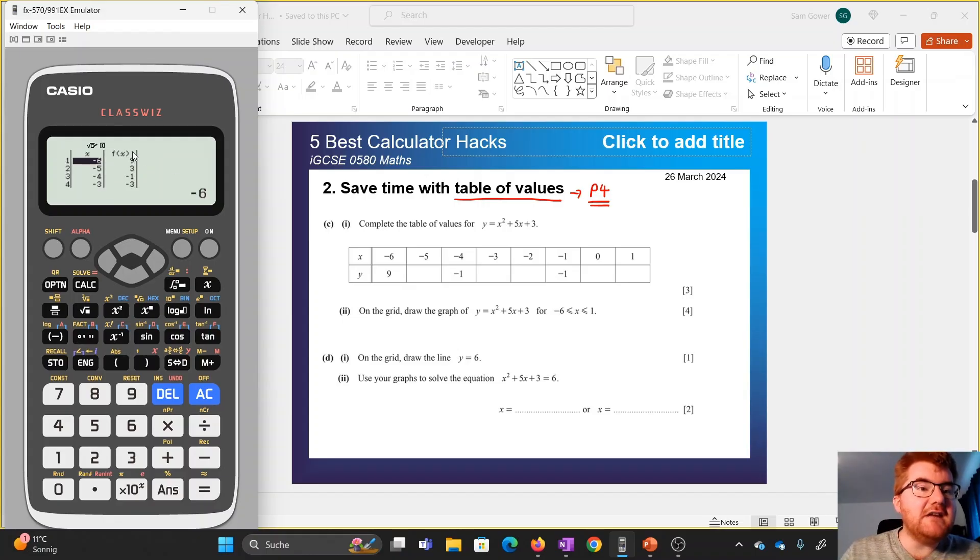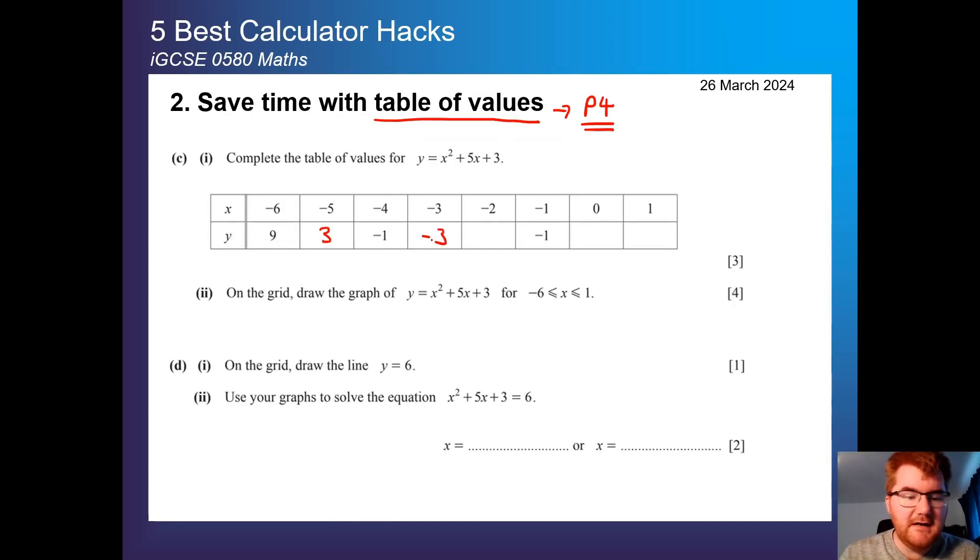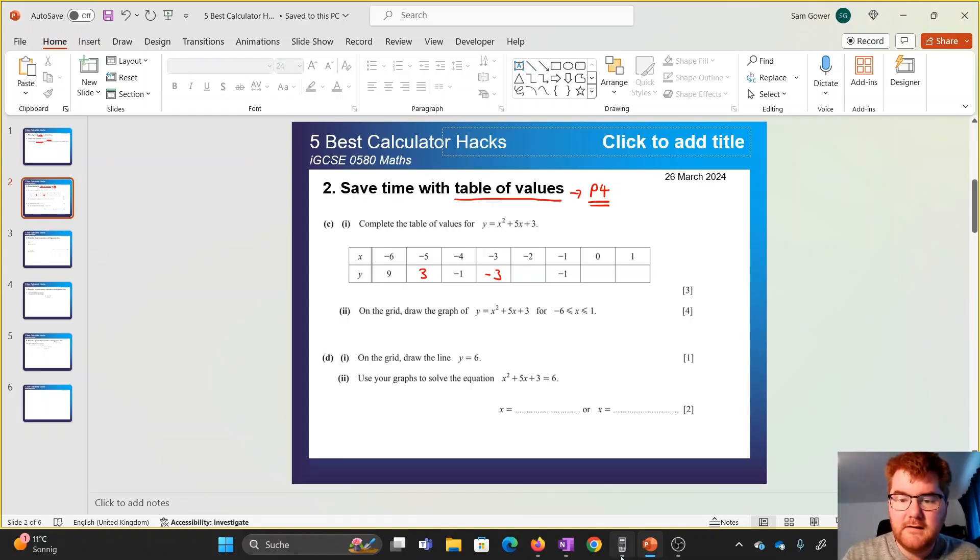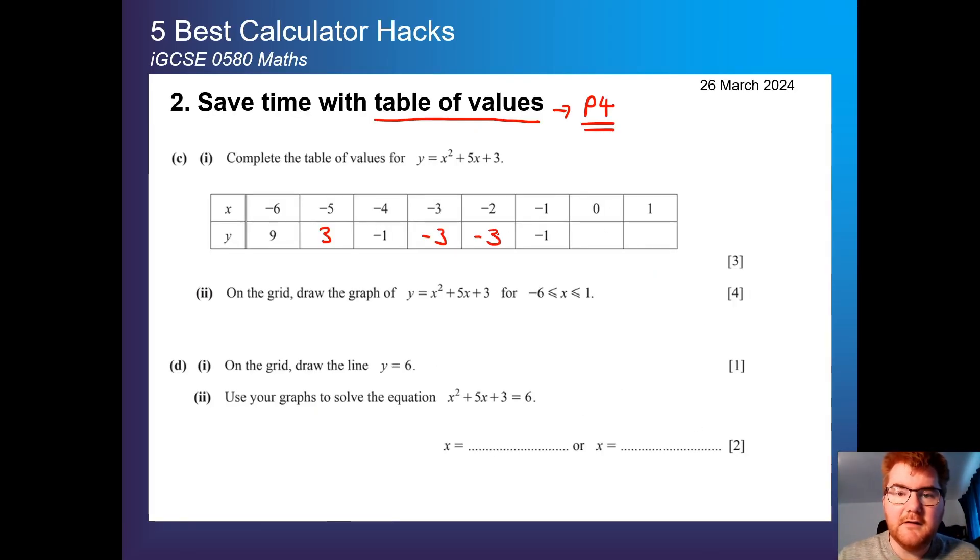We press equals, and notice it generates the table for us. Now minus 6 and 9 we already know, minus 5 and 3, minus 4 minus 1. So we just type in these numbers. We just write them in. We get 3 here, we have minus 3 here. Let's check the last ones. So we just scroll down. So we have 5, minus 2, minus 3, minus 1, minus 1 we agree with, minus 3, minus 1, 3 and 9. So we can type in these values, 3 and 9. Notice how much time you have saved by doing a question like this.